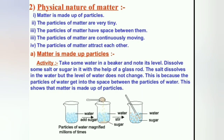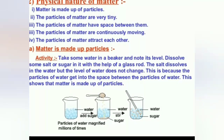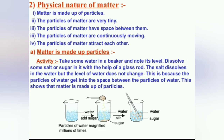Next, the physical nature of matter. There are five physical properties: first, matter is made up of particles; second, the particles of matter are very tiny; third, the particles of matter have space between them; fourth, the particles of matter are continuously moving; fifth, the particles of matter attract each other.